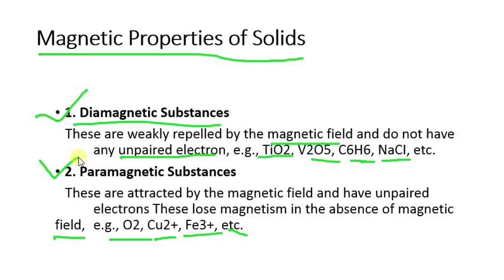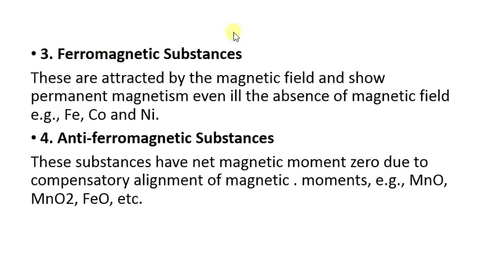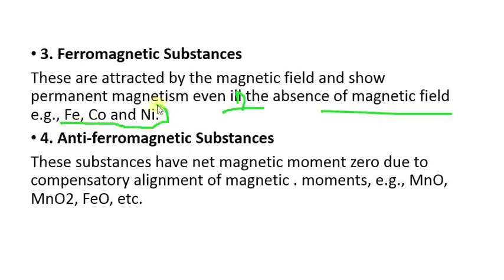To summarize: diamagnetic species have zero unpaired electrons; paramagnetic species have at least one unpaired electron. The third type is ferromagnetic species. These are attracted by the magnetic field and show permanent magnetism even in the absence of a magnetic field. Examples you must remember: iron, cobalt, and nickel are the ferromagnetic substances.